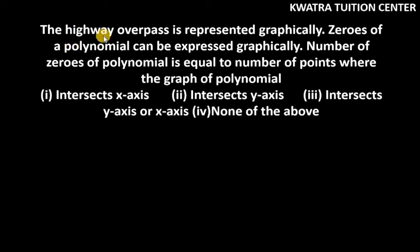Next question: the highway overpass is represented graphically. Zeros of a polynomial can be expressed graphically. Number of zeros of a polynomial is equal to number of points where the graph of polynomial intersects x-axis.